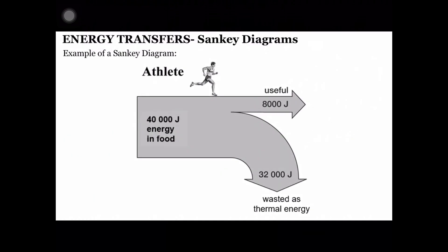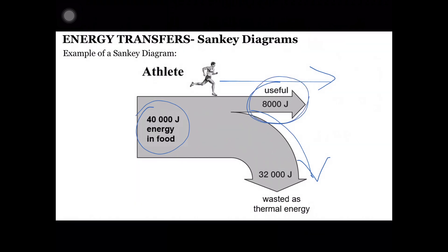Here is an example of a Sankey Diagram. Over here is the total energy input of 40,000 joules. If we follow the arrow going straight towards the right, this shows the useful energy output. Useful outputs are usually illustrated by straight arrows coming from the input. The arrows going downwards — sometimes upwards — represent the wasted energy. In this Sankey Diagram, the useful energy output is 8,000 joules and the wasted energy is 32,000 joules.